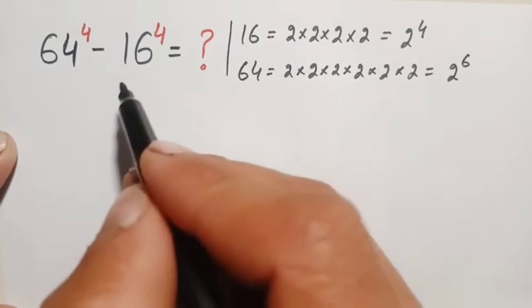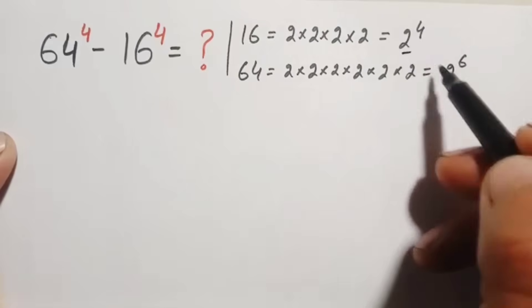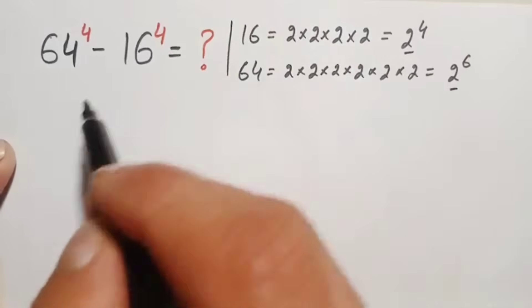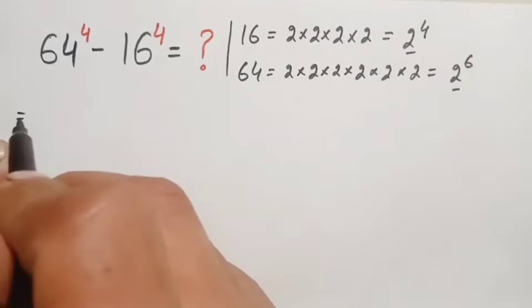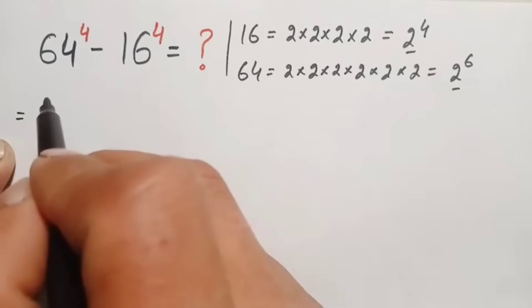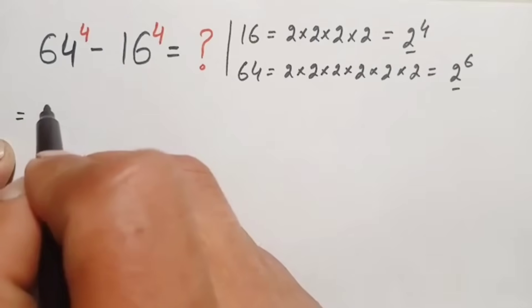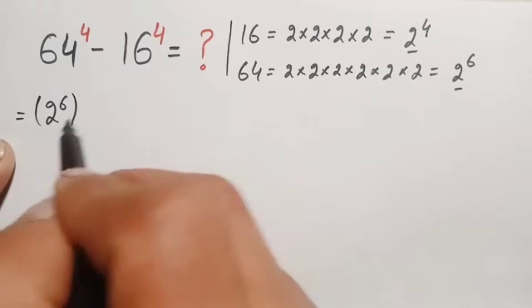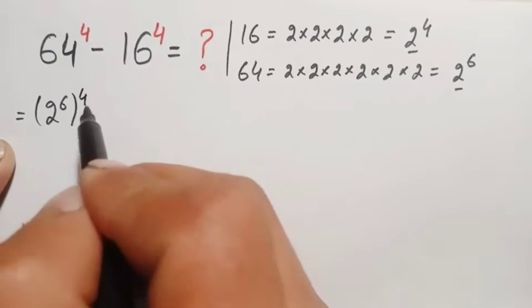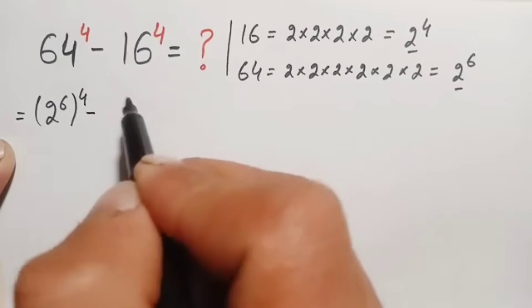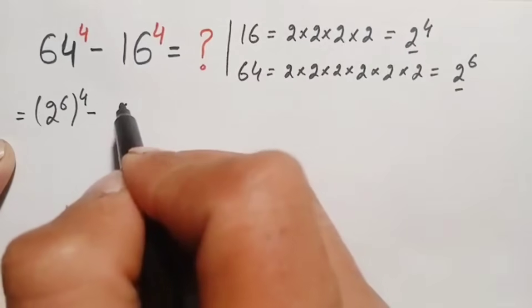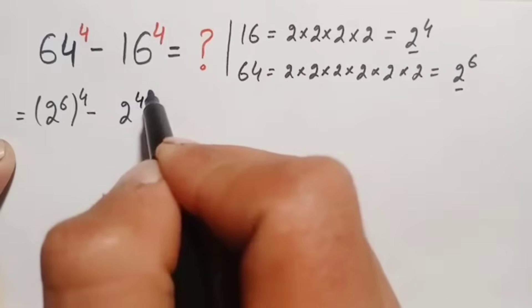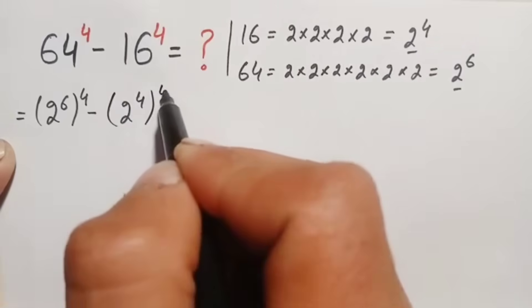Now we replace these two numbers with their exponential values. The expression becomes: 64 = (2^6)^4 minus 16 = (2^4)^4.